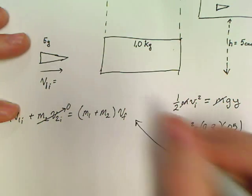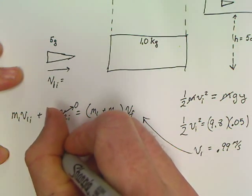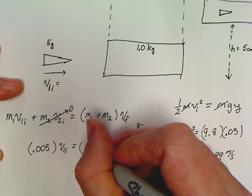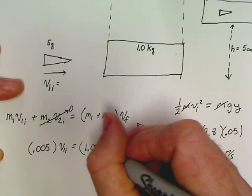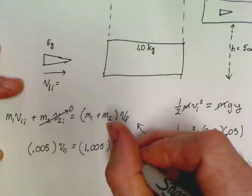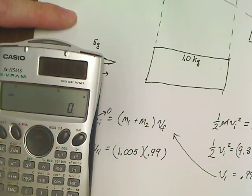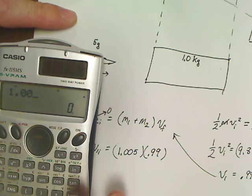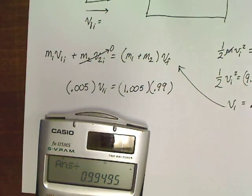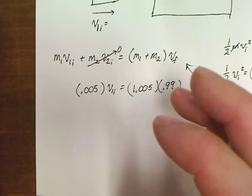That means the final velocity from this part has to be 0.99. So we're going to take this and plug it in right here. This bullet had a mass of 0.005 kilograms equals 1.005. That would be my M1 plus M2 times 0.99. And I'm going to put this in the calculator, although it's almost unnecessary. 1.005 times 0.99 divided by 0.005. You're a good man, Taylor. Yeah, and you're on video now. But anyway.